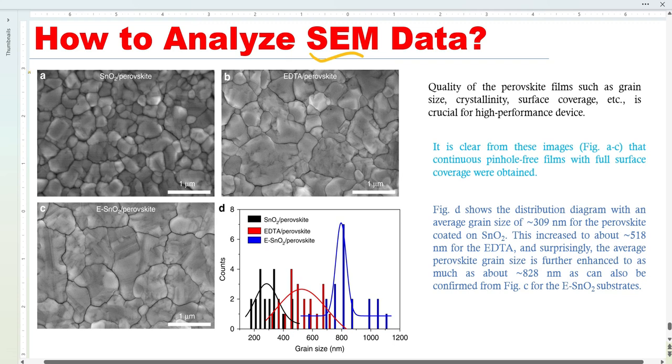We have three different samples. For example, we have perovskite material and we deposit this perovskite material on tin oxide. In the next sample, we basically change this tin oxide to EDTA - the same perovskite we deposit on EDTA.